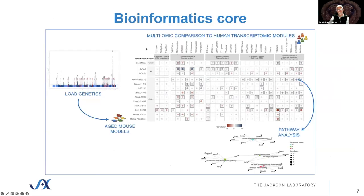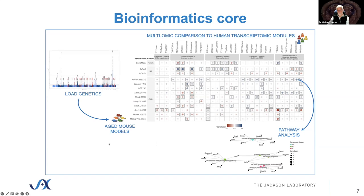We have a bioinformatics core led by Greg Carter here at JAX. He's taken human genetics and identified which variants we should put into mouse models. Here you see a large number of risk variants we've put into mouse models. We're doing multi-omic comparisons to human transcriptomic modules, pathway analysis, and understanding how they relate to human Alzheimer's disease. We're making dozens of these, but we're going to focus on a relatively small number for deeper and later phenotyping. That doesn't mean the other models have no value — we think all of them will have some research application.